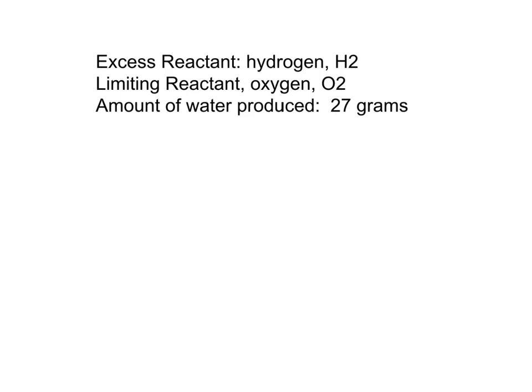To summarize: the excess reactant is hydrogen — not every bit of hydrogen was used, and there was hydrogen left over at the end of the reaction. The limiting reactant was oxygen — every bit of oxygen was used, it was the reactant which ran out first. The amount of water produced in the reaction was 27 grams.